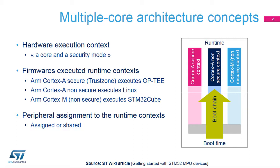First of all, a hardware execution context is defined by a core and a security mode. On the STM32MP1 microprocessor, there are three hardware execution contexts: ARM Cortex-A Secure, also called TrustZone; ARM Cortex-A Non-Secure; and ARM Cortex-M, supporting only the non-secure mode.